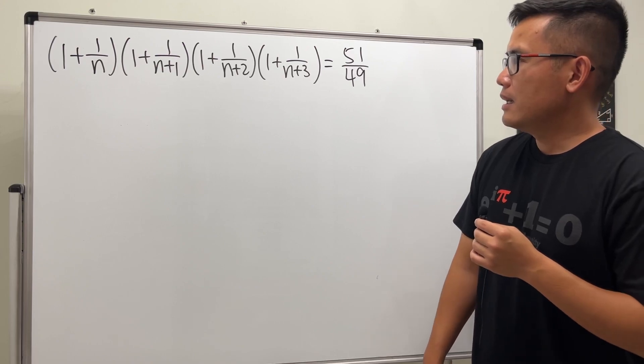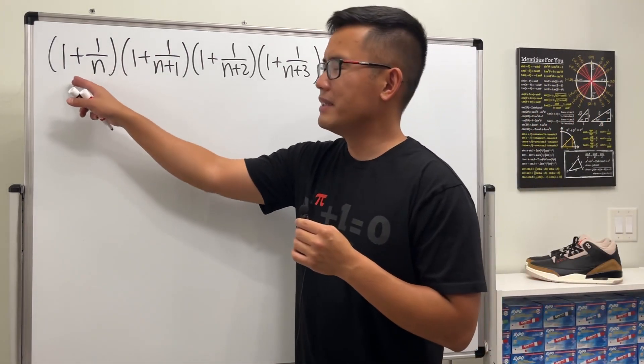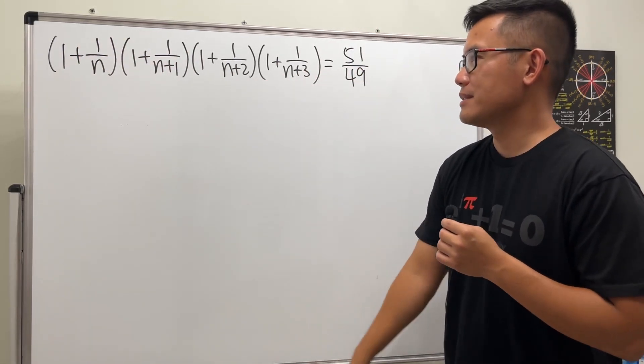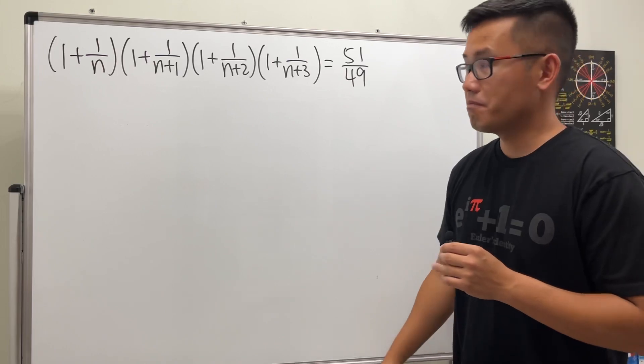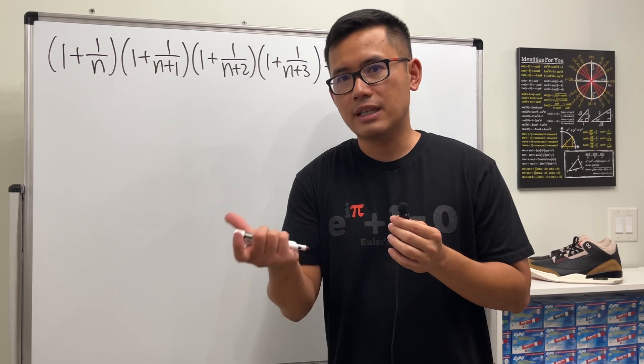If we multiply this out, it's going to be crazy because you have to four times, but you know what, let's go ahead and just combine the fractions instead of each parenthesis and hope for the best.